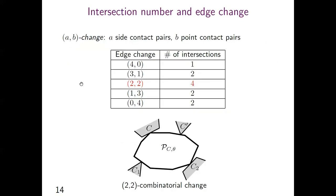The number of intersections of each pair of functions is determined by the edge changes that occur due to the pair of functions. If the edge change has A side contact pairs and B point contact pairs, we call this an AB-change. In the figure, the edge change occurs by two functions h_C and h_C'. There are four intersections when the edge change is a 2-2 change. In the other cases, the number of intersections is at most 2. I will introduce the strategy to reduce the number of 2-2 changes.